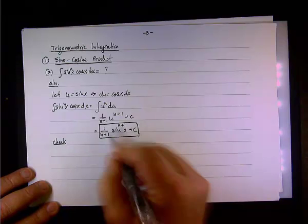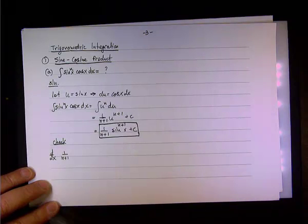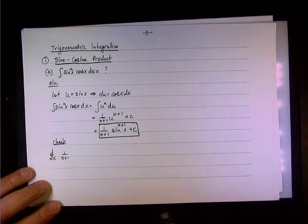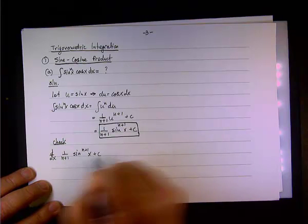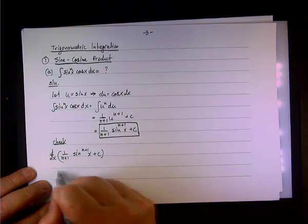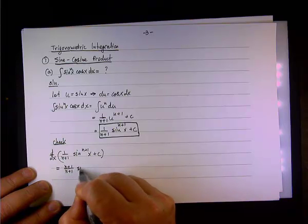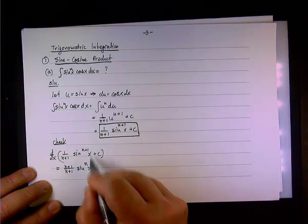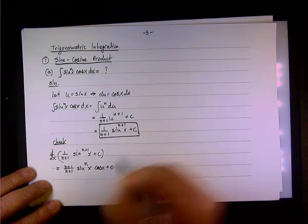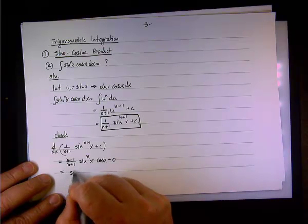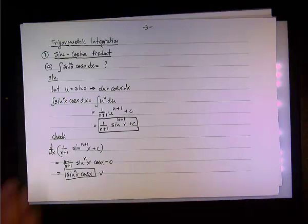The property we're using here is the derivative of the power of the sine. If we check this result and take the derivative of our answer, we should come back with the product we started with: sine x to the power of n times cosine x. Taking the derivative gives n plus 1 over n plus 1, times sine to the n plus 1 minus 1 — so we're back to sine to the n — and then the derivative of sine by the chain rule is cosine. The derivative of c is 0, and we end up with sine x to the nth power times cosine x, as advertised.